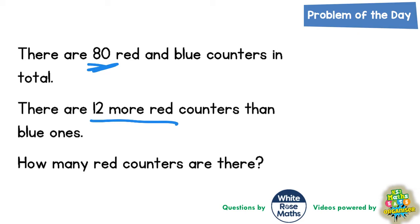Well we've got very little to go on. All we know is that there's 80 red and blue altogether but there are 12 more red than blue. Now the trick with this one is to use a strategy of drawing a bar model.